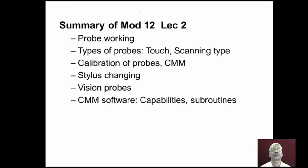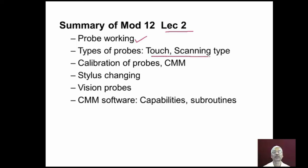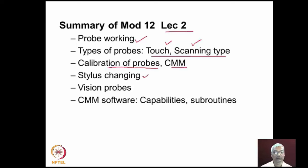Let us summarize module 12 lecture number 2. In this lecture, we discussed about probe working — the micro switch arrangement, piezoelectric element, or provision of strain gauges in the probe. We discussed the different types of mechanical probes like touch type probe and scanning type probe, calibration of probes and calibration of CMM, stylus changing depending upon inspection requirement, vision probes, and finally CMM software — its capabilities and the various subroutines used. With this, we conclude this lecture. Thank you.